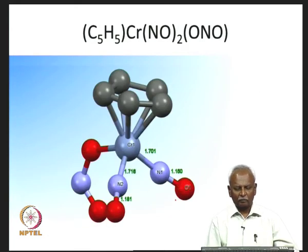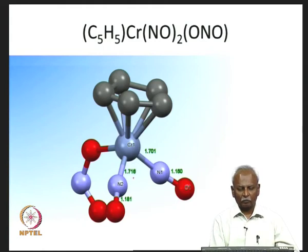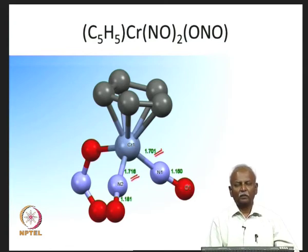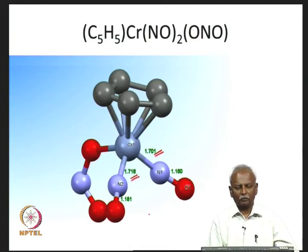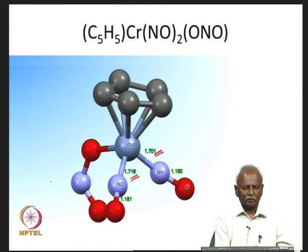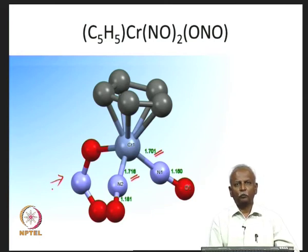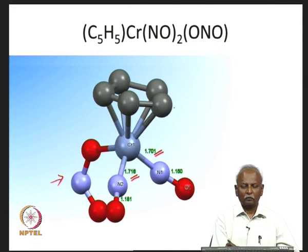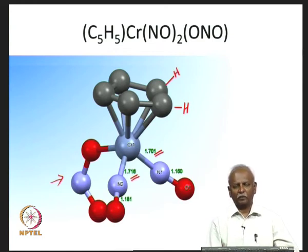Here is another example of a complex which has got both nitric oxide and nitrite bonded to chromium. Once again these bond distances are quite small compared to what you would expect for single bond distances. In this chromium complex, the bond distance is significantly less compared to the molybdenum-nitrogen bond distance we encountered. We have two nitric oxide molecules bonded to chromium, plus a nitrite ion bonded through the oxygen to the chromium. The hydrogens on the cyclopentadienyl moiety are not shown, but each carbon has a hydrogen.